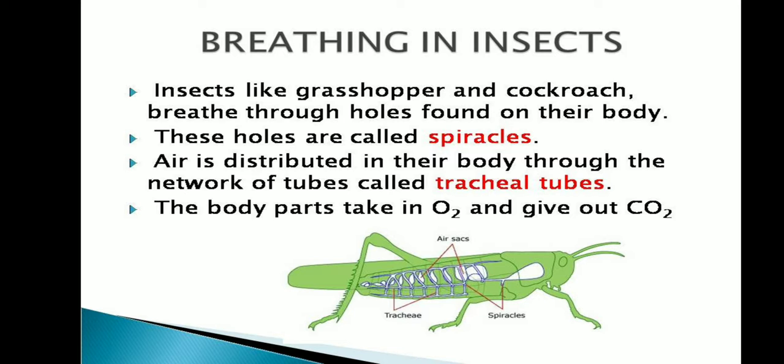In their body, a network of tubes is present. Through those tubes, air is distributed entirely through the body. These tubes are referred to as tracheal tubes. Through them, insects intake oxygen and release carbon dioxide.